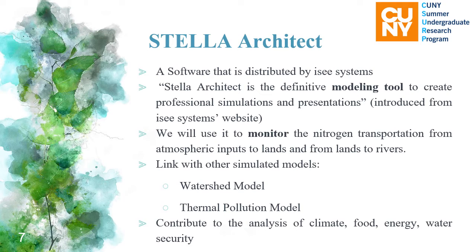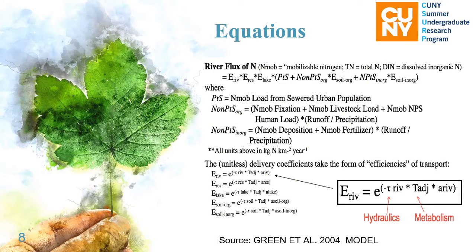They will all contribute to the analysis of climate, food, energy, and water security. This equation is from the paper, and we will use it to calculate nitrogen transportation from lands to the mouth of the river. Two sources: one is point source like urban human waste, and non-point source either organic or inorganic. For the organic source, it includes deposition and fertilizer. Non-point source will be affected by the runoff and delay coefficient of soil organic or inorganic.